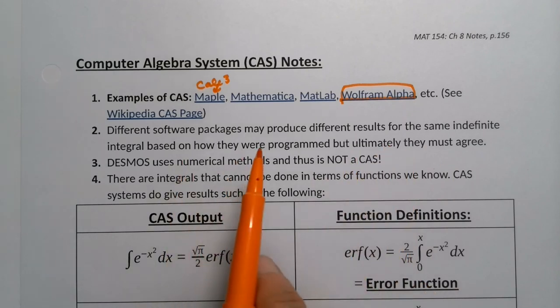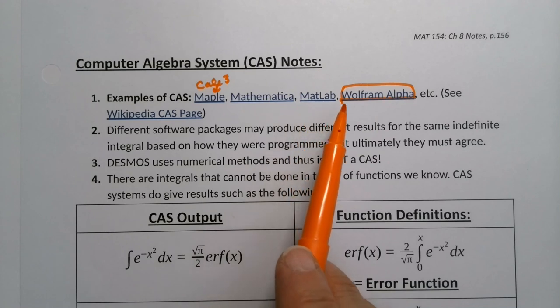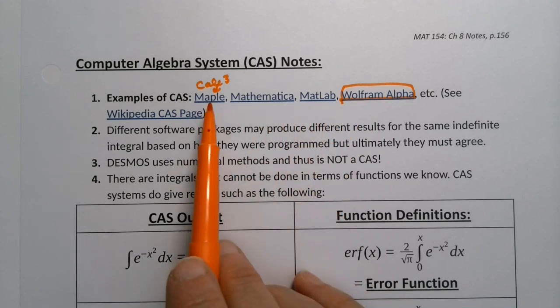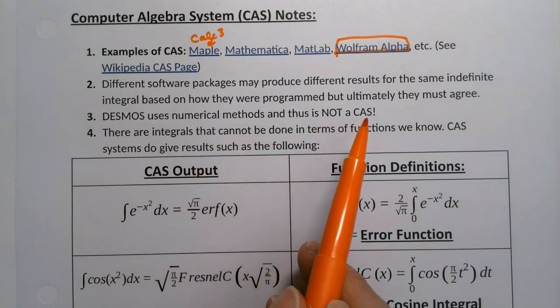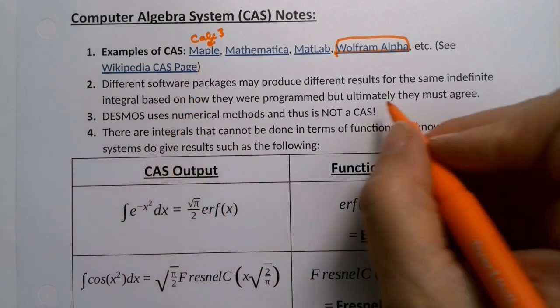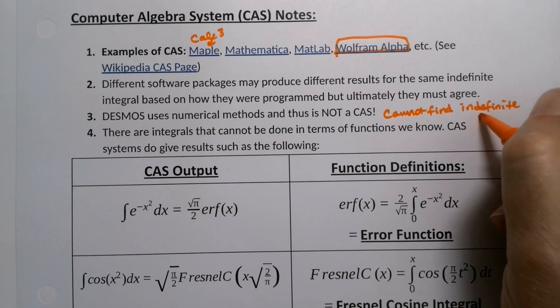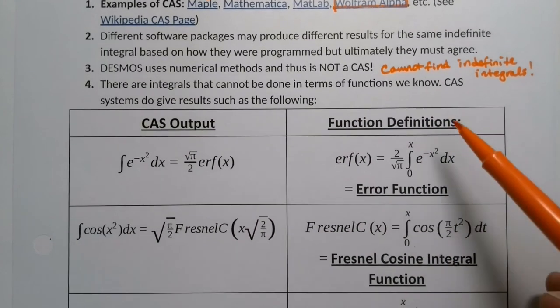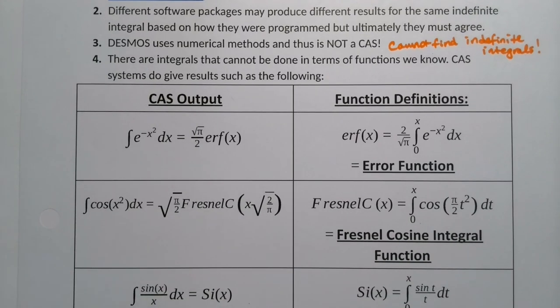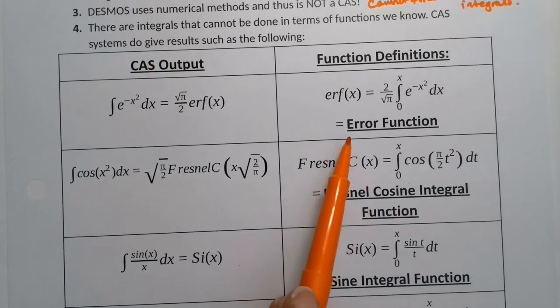Different software packages may produce different results for the same indefinite integral because of how they were programmed and they do ultimately agree, but they will show you different things. I've run into that with Wolfram and Mathematica are made by people in Britain originally, and they work differently than maple, which is actually from Canada. No irony there. Maple leaves. So they sometimes program things differently than each other. Desmos uses numerical methods, but is not a CAS. It's not a computer algebra system. It cannot find indefinite integrals, which we already knew. It'll find numerical things, but that's about it. And there are integrals that cannot be done in terms of functions we know, as we just saw with the Fresnel function. Fresnel also happens with cosine of X squared. The sine integral function, the cosine integral function, the error function, the Bessel function. There's other functions out there.